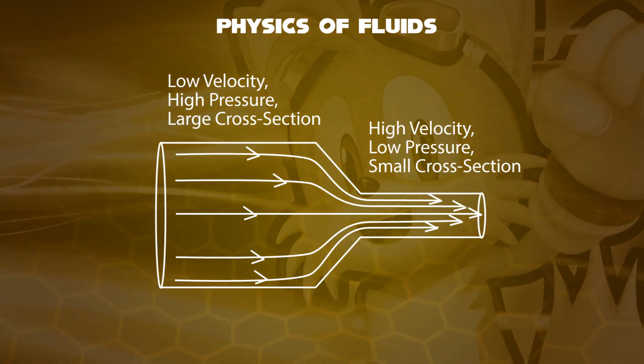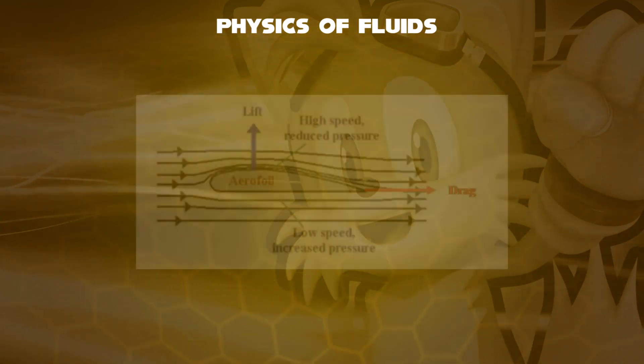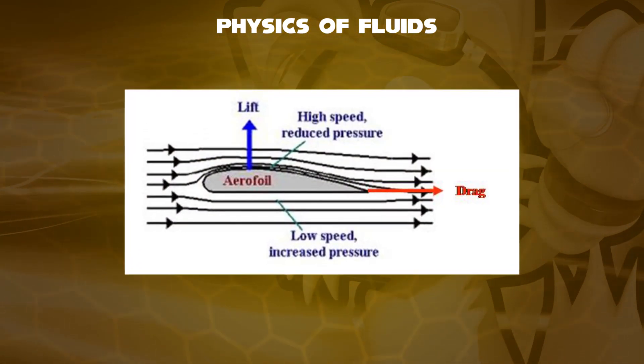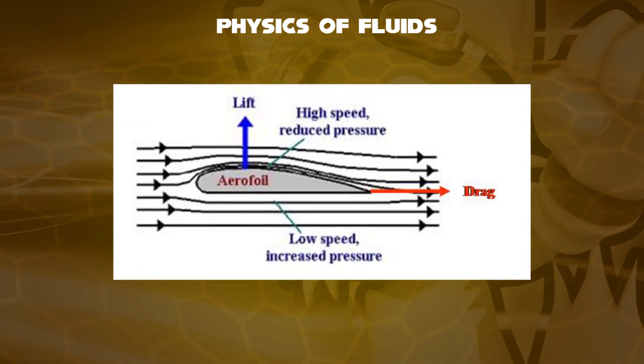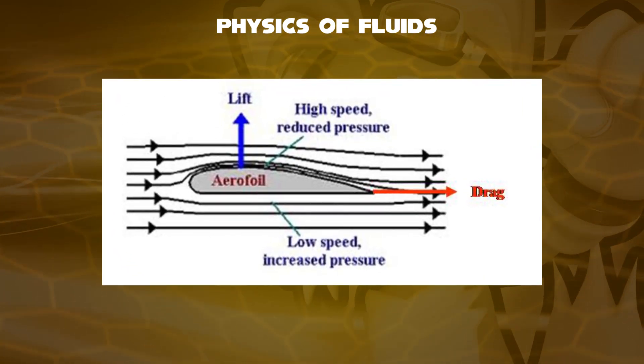This whole thing is called a venturi meter, based on Bernoulli's principle. Related to water flow, air flow is also used, such as wings of an airplane, will be its third example.